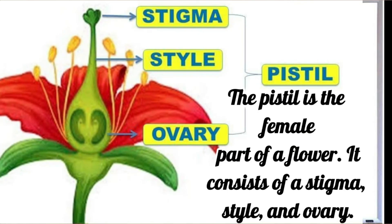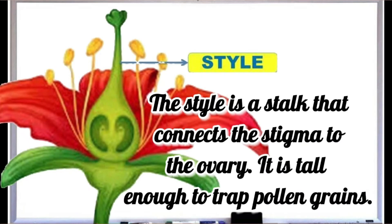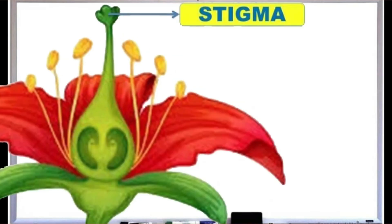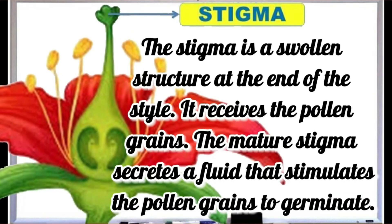The pistil is the female part of a flower. It consists of a stigma, style, and ovary. The style is a stalk that connects the stigma to the ovary. It is tall enough to trap pollen grains. The stigma is a swollen structure at the end of the style. It receives the pollen grains. The mature stigma secretes a fluid that stimulates the pollen grains to germinate.